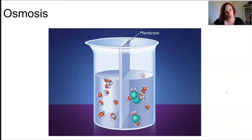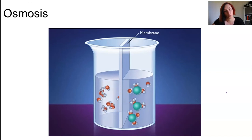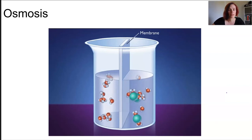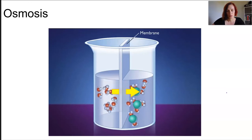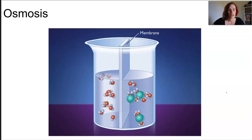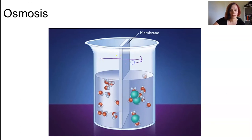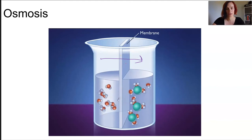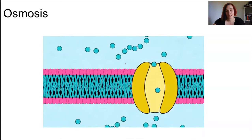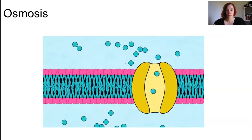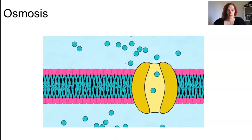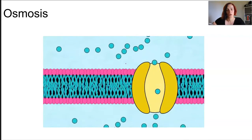Osmosis is the movement of water across a concentration gradient — it's diffusion but for water. Water is usually the solvent and is far more mobile than the solute. The water molecules move back and forth, but remember it's about the net movement — mainly from left to right, though some water molecules will pass in the other direction too. Water can pass between phospholipids, but there are also aquaporins, which are protein channels used for the bulk of the water movement, allowing molecules through single file.